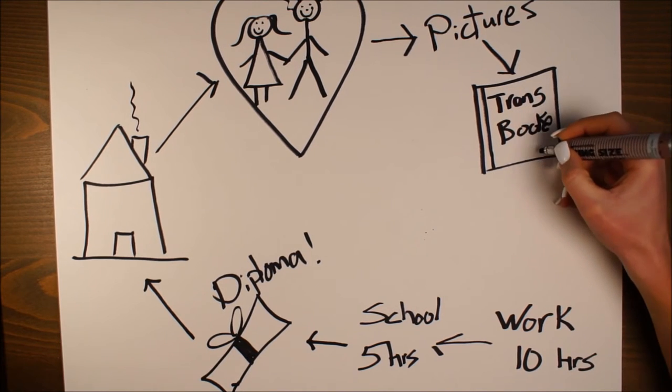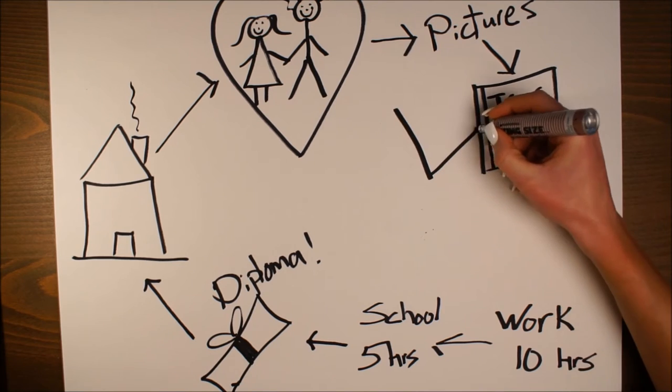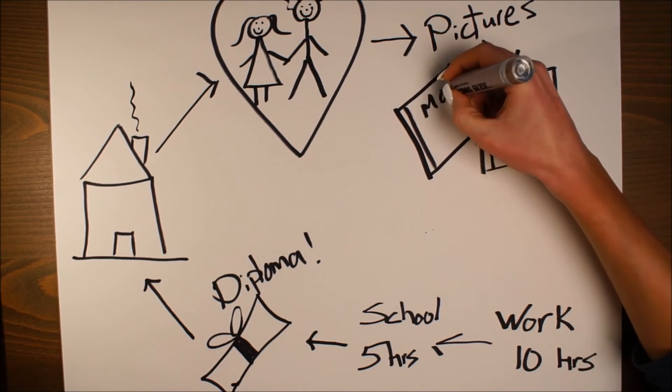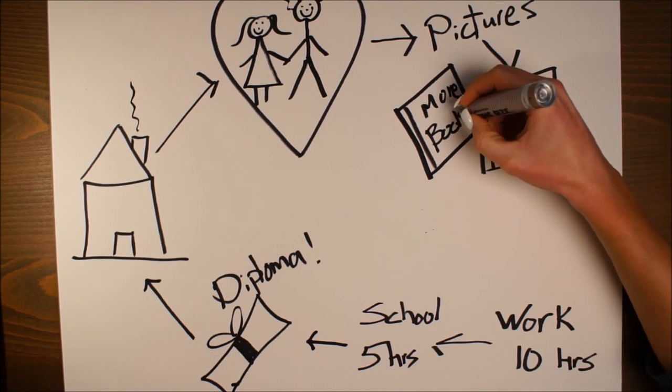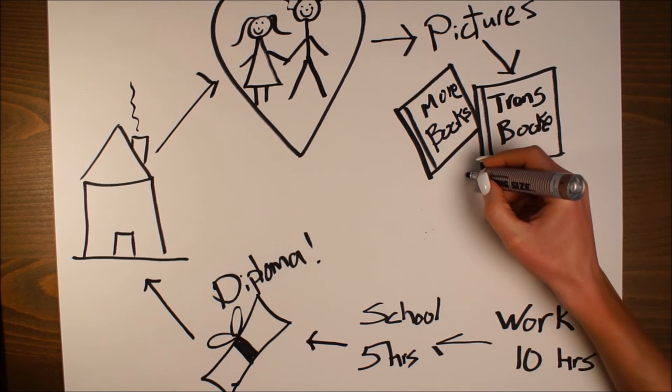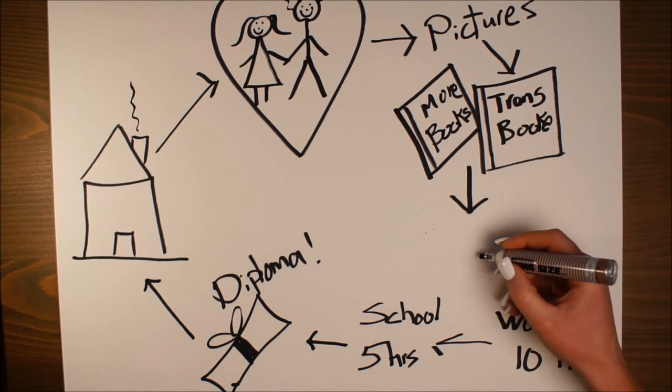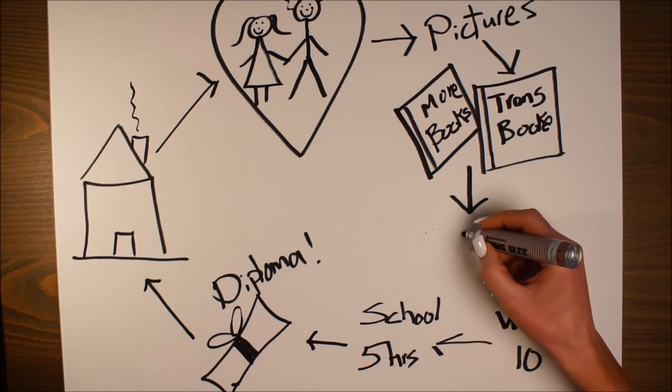She read every book she could get her hands on, but as hard as she tried, she was still a heterosexual woman and she needed to be with a man, which we both knew I wasn't. So eventually she had to end things.